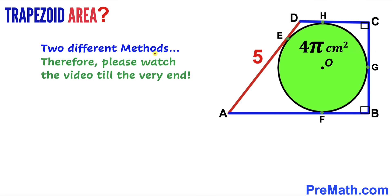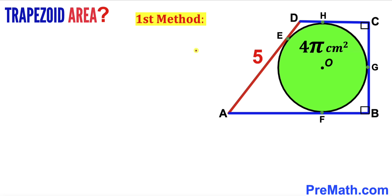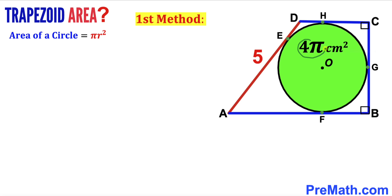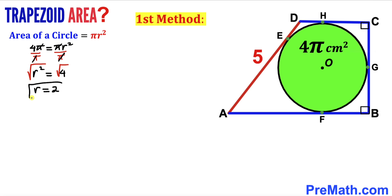In this video I am going to share two different approaches, so please watch till the very end. Here's our first method. Before we do anything we must find the radius of this green shaded circle. Recalling the area of a circle formula: area equals π r². In our case the area is 4π, so 4π = π r². Dividing both sides by π gives r² = 4, and taking the square root gives radius r = 2 centimeters.